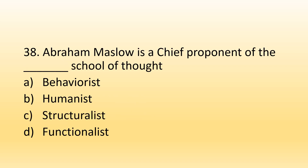Number 38. Abraham Maslow is a chief proponent of the blank school of thought: Option A, Behaviorist; Option B, Humanist; Option C, Structuralist; Option D, Functionalist. The right option is Option B, Humanist. Abraham Maslow introduced the hierarchy of needs theory, in which he explained five stages that a person must complete, with the last stage being self-actualization.